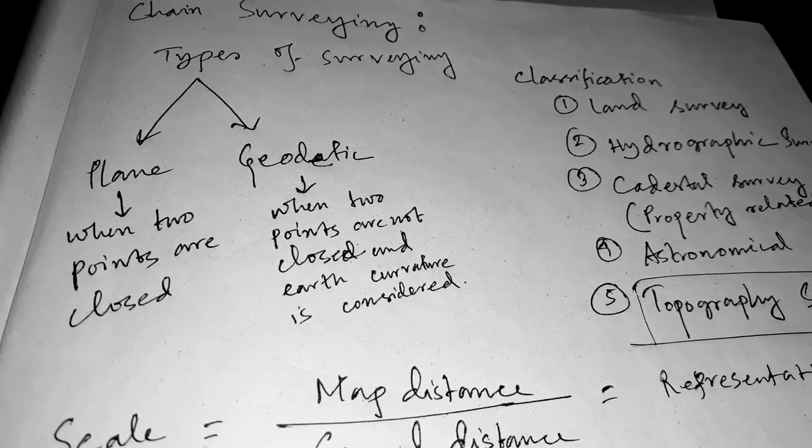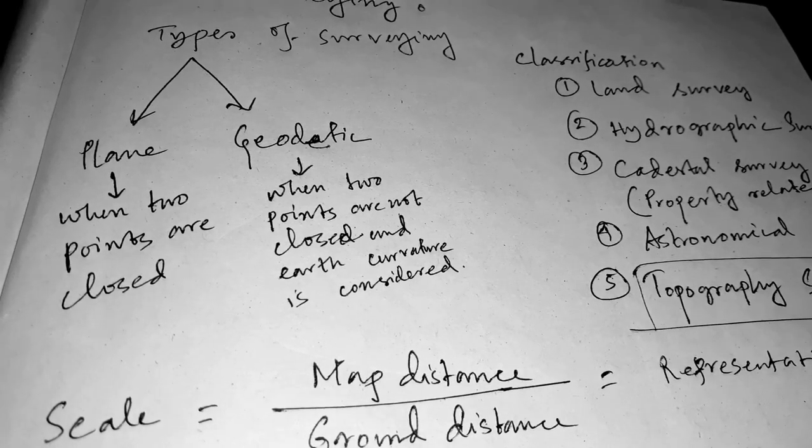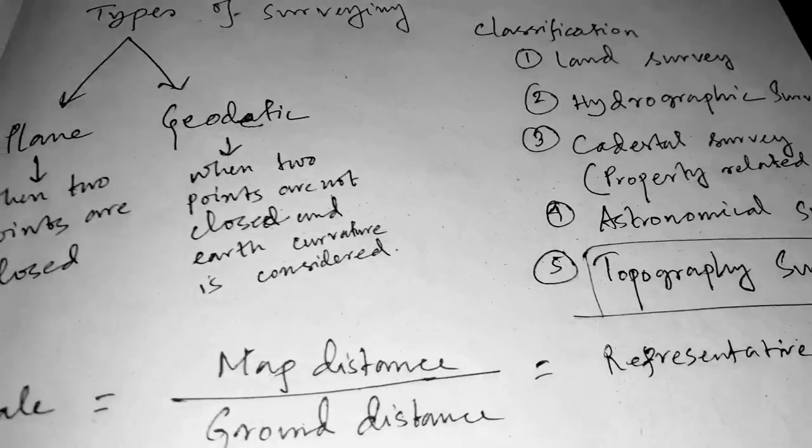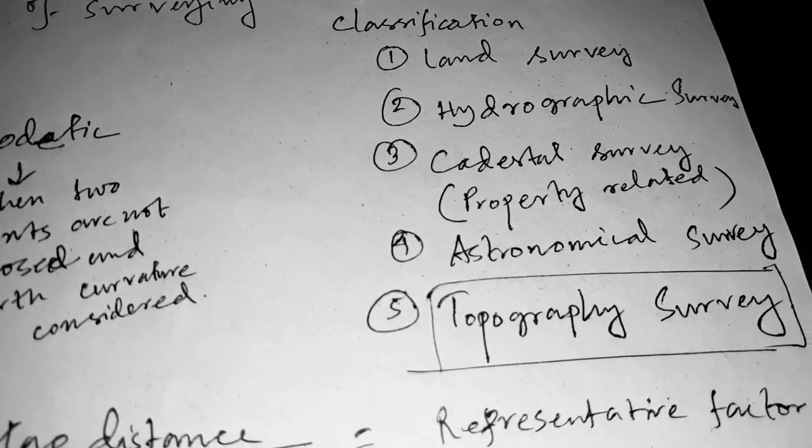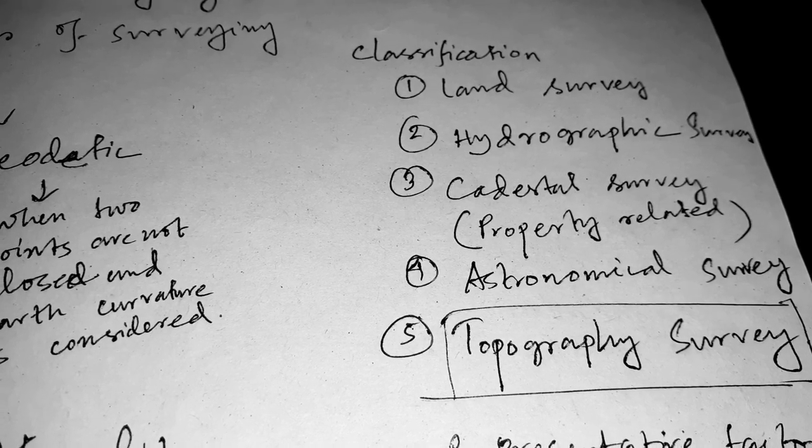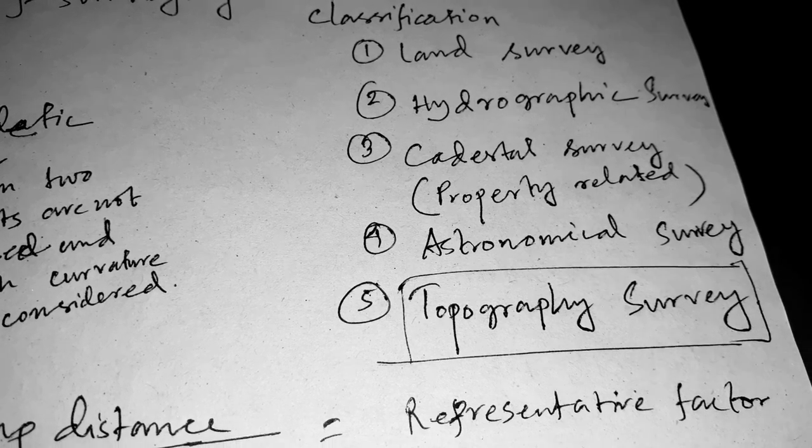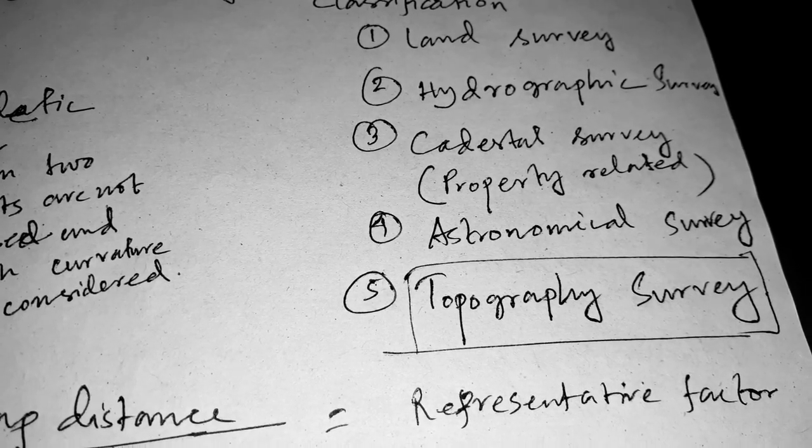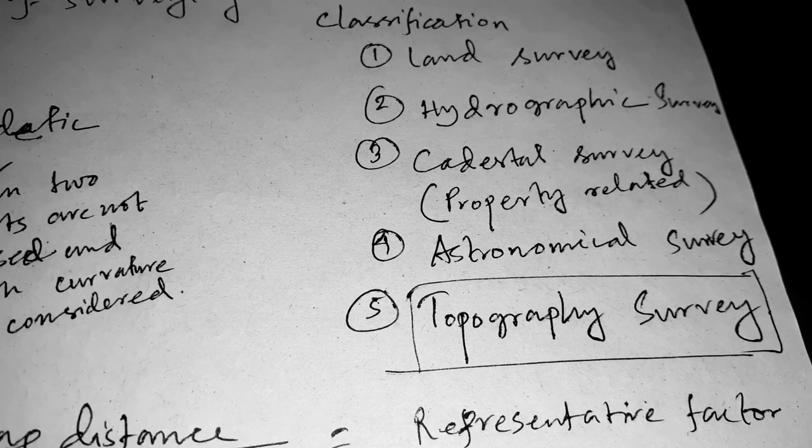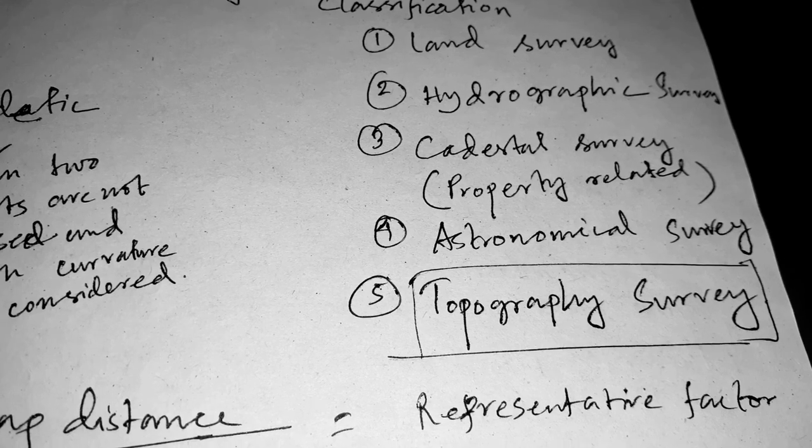What is geodetic surveying? When two points are not closed and the earth curvature is considered, that is called geodetic surveying. Now the classification of surveying is: land surveying, hydrographic surveying, cadastral surveying, which is popularly known as property-related surveying, astronomical surveying, and last is topography surveying.